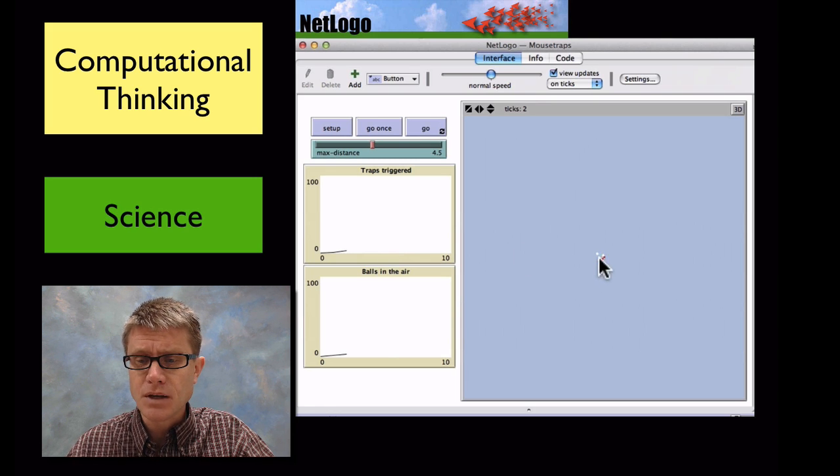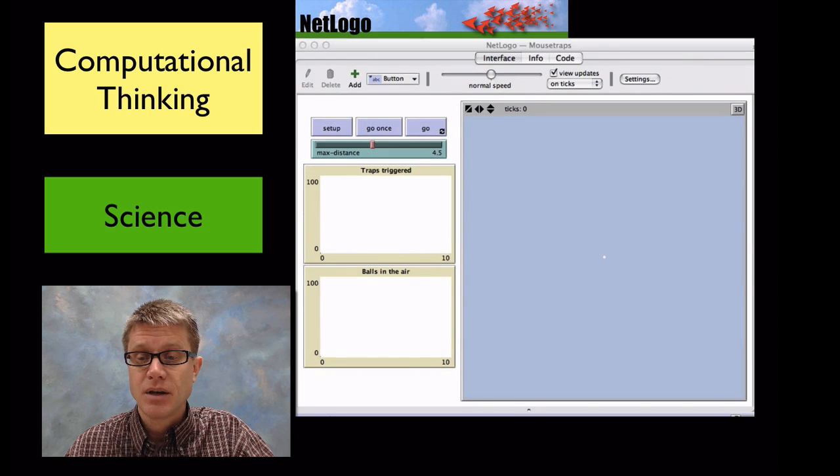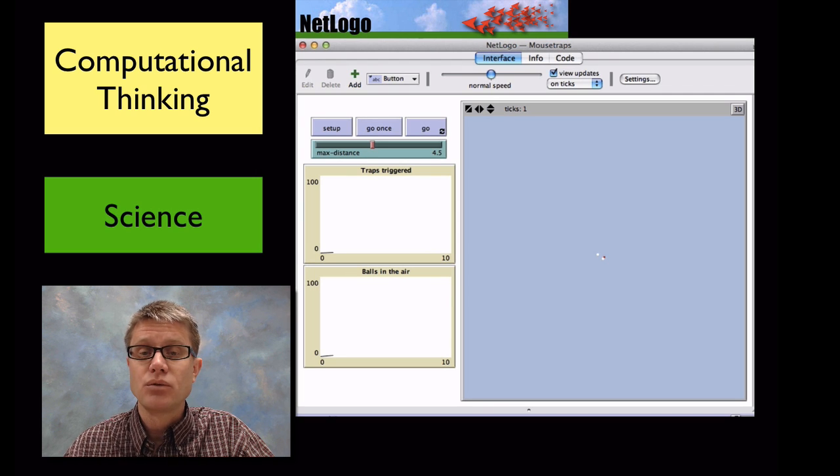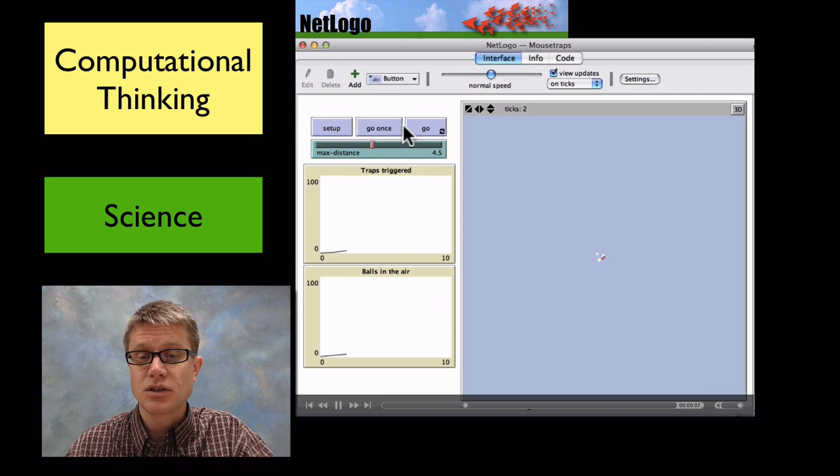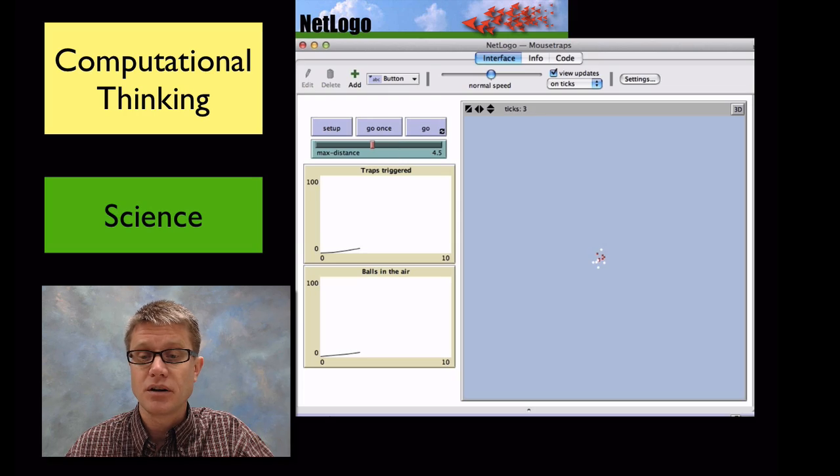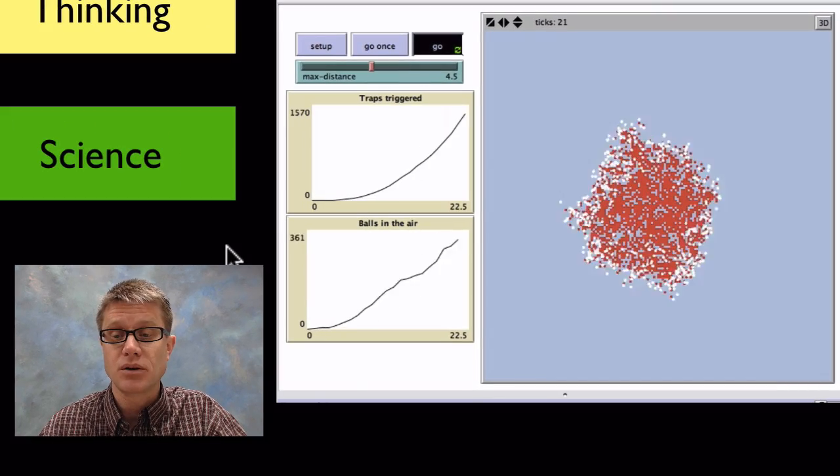Basically what you do is you can set up a number of different agents that do different jobs. And so in this one the red is going to represent one mouse trap that's been triggered, and then these whites are going to represent ping pong balls that fly off. And so when you start it you can just step through the process one after another. But when you really want to run the simulation you just click on this go button up here and it will run the simulation really quickly.